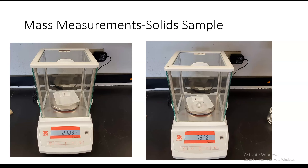Now let's go over the mass measurement. In this lab we will have you measure the mass of the Hershey's Kisses and you will learn how to use the analytical balance to do this. The mass of the weigh boat by itself is 2.703 grams. After adding the Hershey's Kiss along with the weigh boat, the total mass equals 7.376 grams. Your goal is to figure out the mass of the Hershey's Kiss, so you take the final mass, subtract the initial mass, and that gives you the mass of the first Hershey's Kiss.